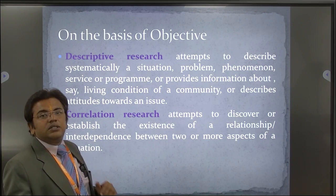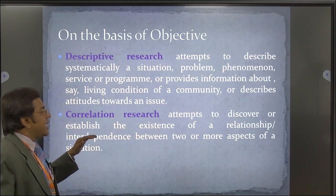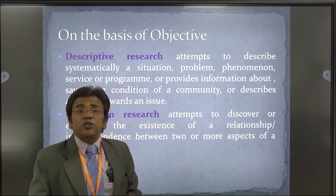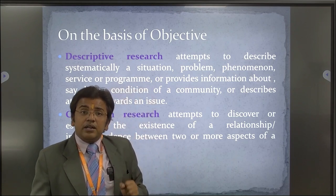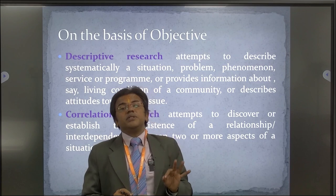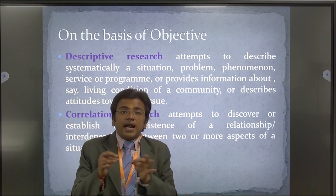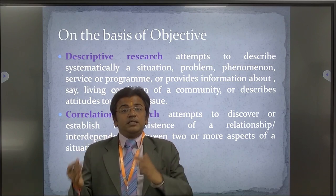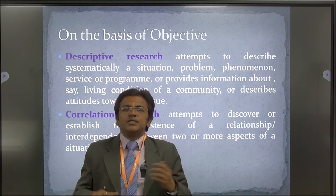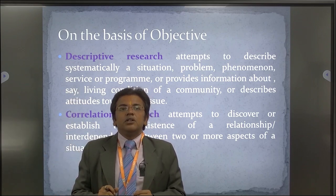Correlation research attempts to discover or establish the existence of a relationship or interdependence between two or more aspects of a situation. What is the interdependence of two values? For example, in a cricket match — what are the chances of winning for two countries? Every time two countries meet, what percentage of chances does India have of winning, or Australia? A statistician notes that in a specific stadium, out of seven matches played, one country won three times and the other four times — that is the correlation. What combination of team is playing? It is all a correlation activity.